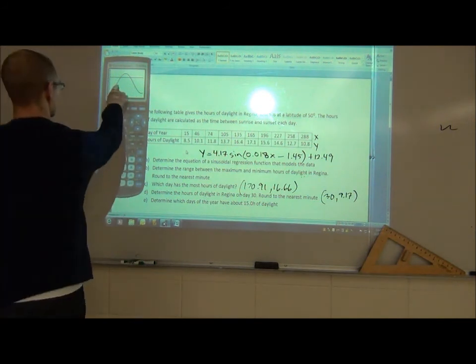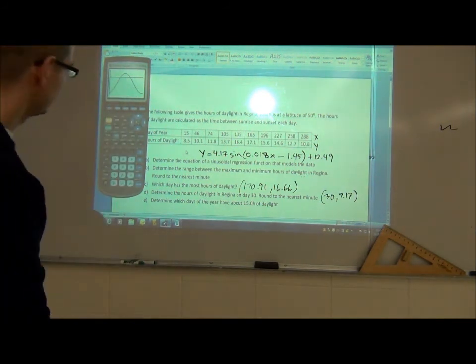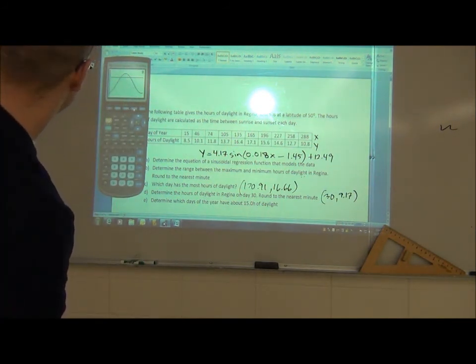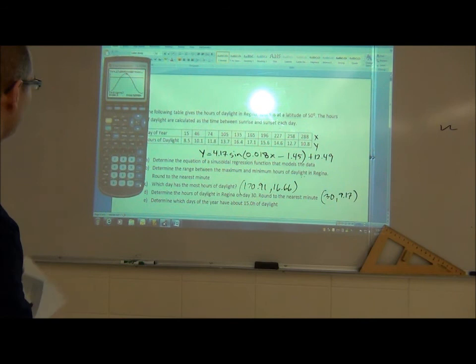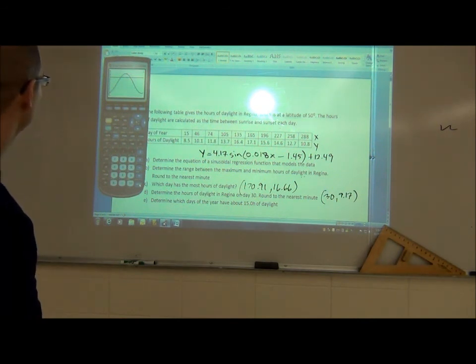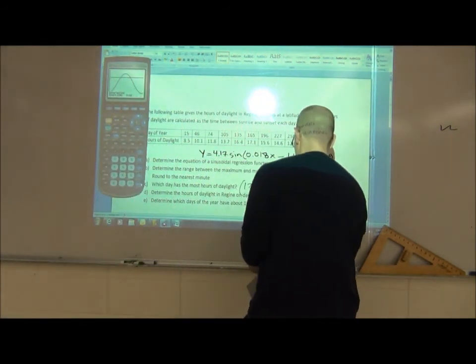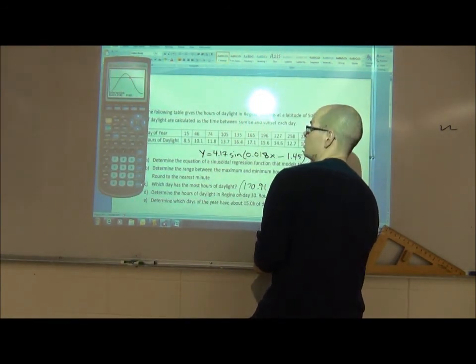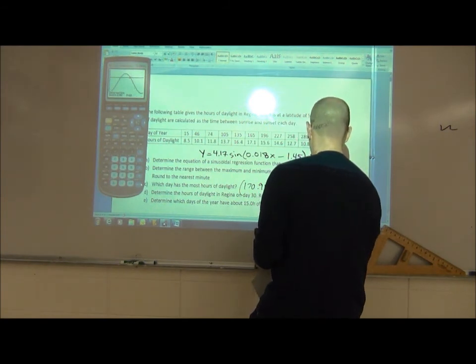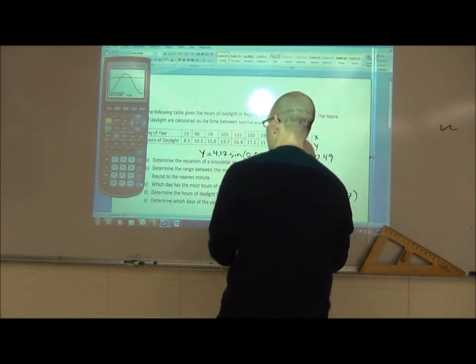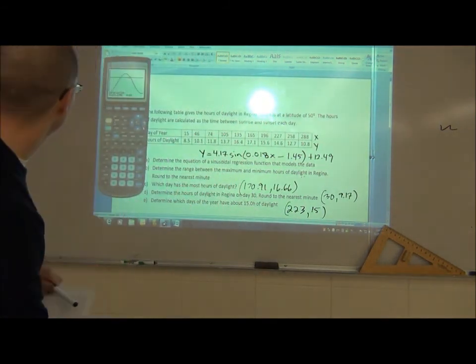You can see that there's going to be two days in the year that have about 15 hours of daylight, so we need to find those two intersection points here and here. You go to calculate, down to intersect, number five, and find those two points. You got to go left bound first curve, enter, second curve, enter.